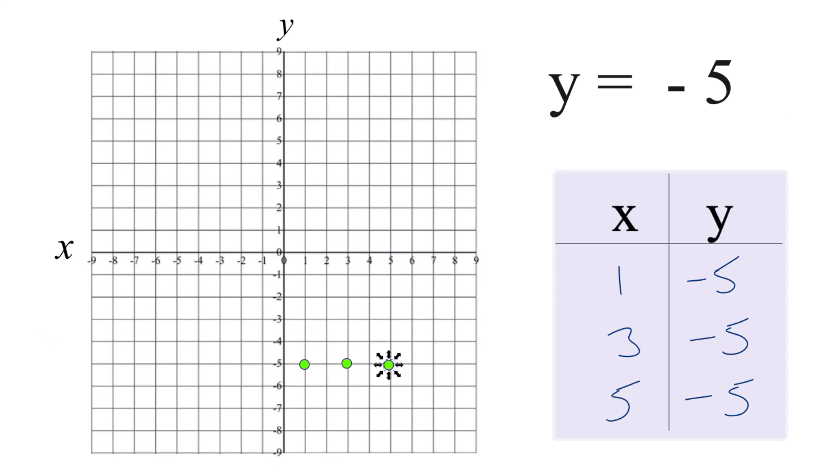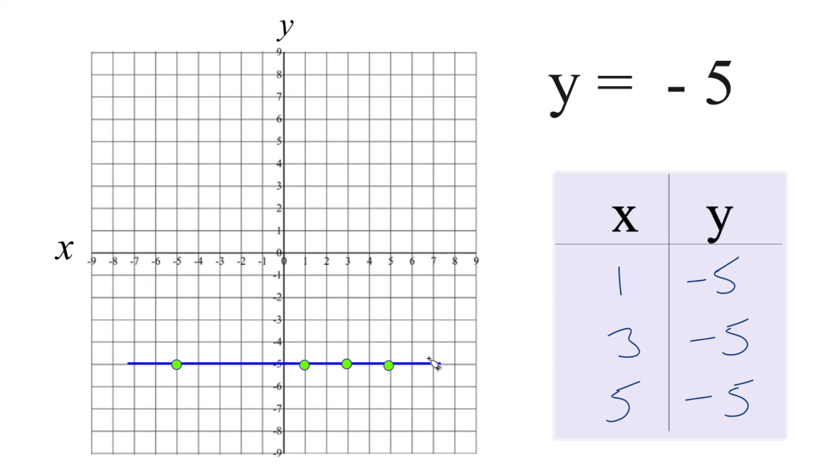So it really doesn't matter. You could say if x is negative 5, y would be negative 5. So we could put a line through this and put arrows like this to show it goes to infinity. And this is the graph for the equation y equals negative 5.